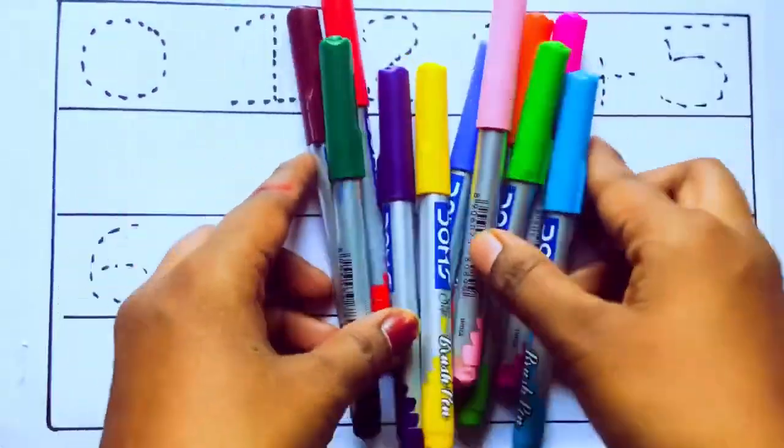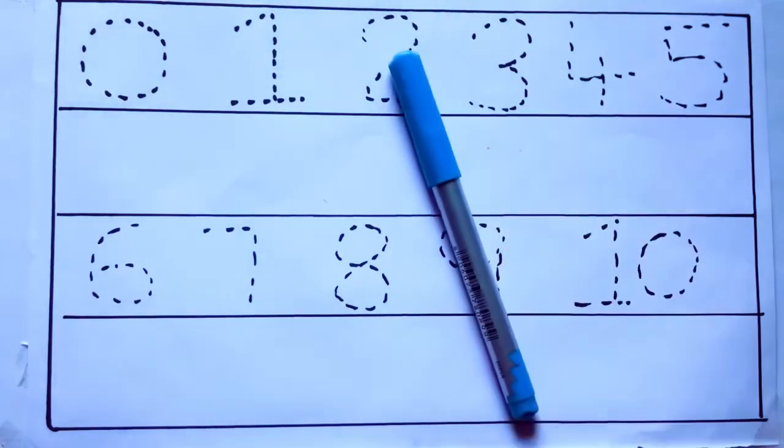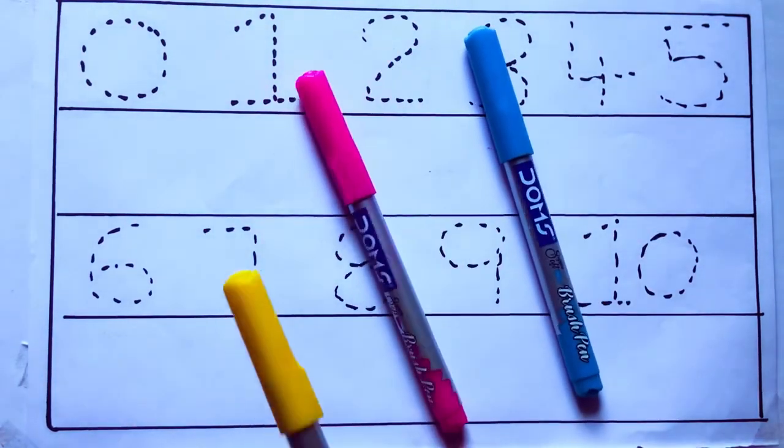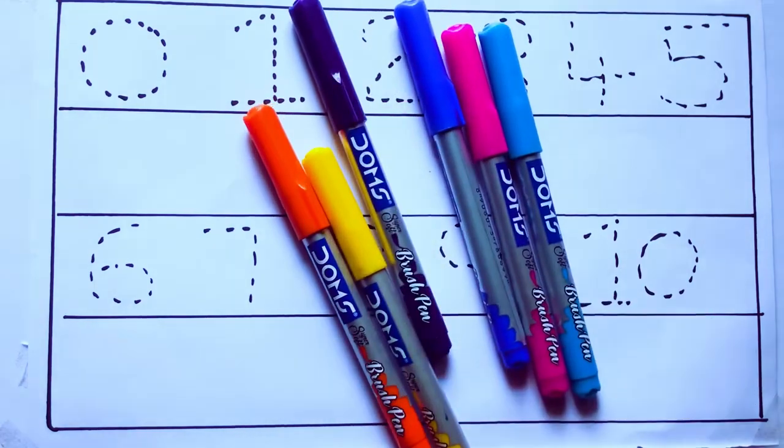Let's learn some colors. These are all the color pencils. Let's learn the names. Sky blue color, pink color, yellow color, orange color, violet color.